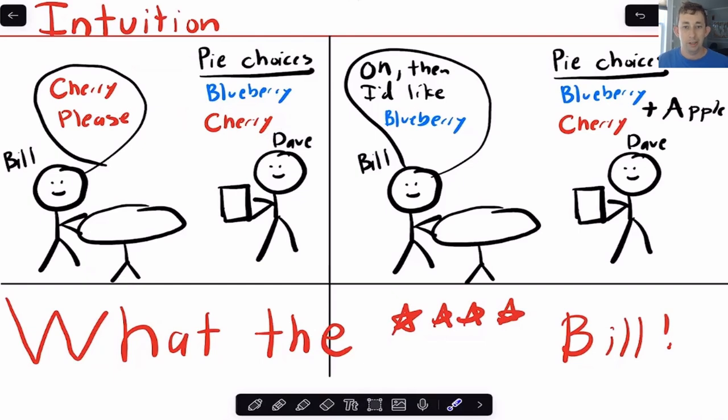So then Dave goes to the back to put in the ticket, comes back, and he says, hey Bill, I'm really sorry, I totally forgot. Today's Thursday, and on Thursdays we also have apple pie, so your choices are blueberry pie, cherry pie, or apple pie. Would you like to switch? And Bill thinks for a minute and says, actually, I would like to switch. I would like blueberry pie.